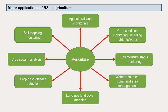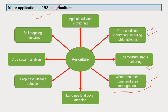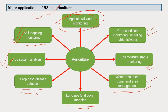The major applications of remote sensing in agriculture are numerous: crop condition monitoring, soil moisture status monitoring, water resources command area management, watershed management, land use and land cover mapping, crop pest and disease monitoring — helping understand how much area is under infection — crop system analysis which can be integrated with crop models and GIS, soil mapping and monitoring, and agriculture land monitoring to track how much area is covered under crops.